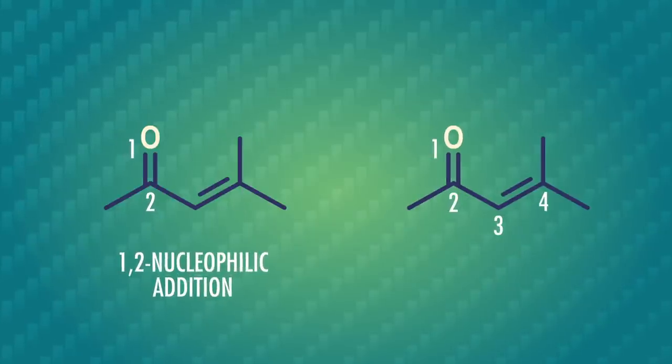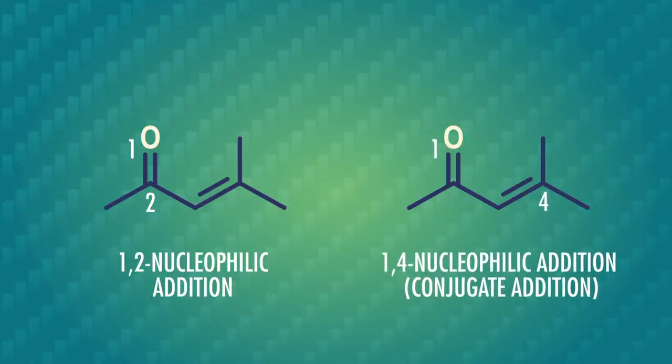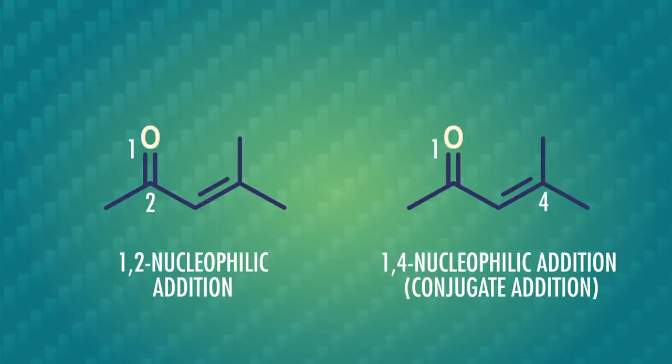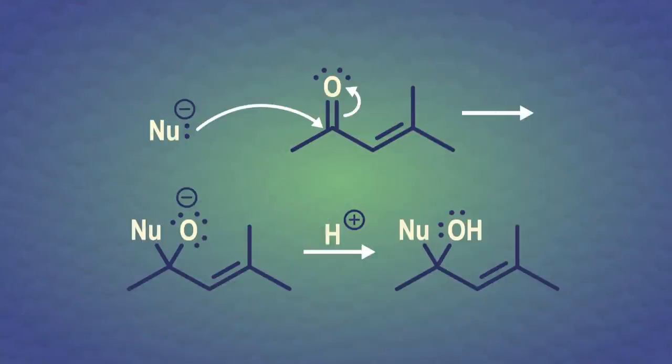So there are two possibilities for an enone reaction. There's 1,2 nucleophilic addition, where the nucleophile adds to the carbonyl carbon. Alternatively, we could get 1,4 nucleophilic addition, also known as conjugate addition, where it adds at the 4 position. It's using the whole conjugated system to do the reaction, and that's where it gets its name. In 1,2 addition, the nucleophile attacks the carbonyl carbon. The pi electrons in that bond are shunted up to the oxygen, which then picks up a proton to form a hydroxyl group. Fairly simple and familiar.